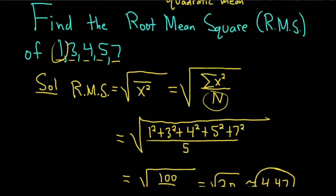So again, you just take each of these numbers - 1, 3, 4, 5, and 7 - square them, divide by 5, and then take the square root.